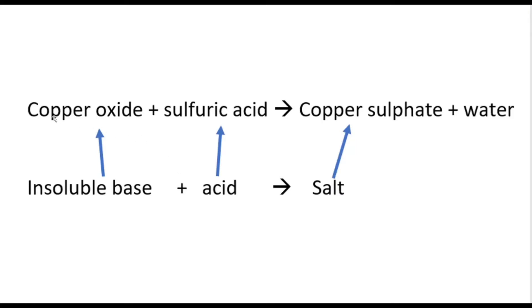Copper sulfate can be made by reacting copper oxide, which is an insoluble base. A base is a substance that reacts with an acid to give you salt and water. Copper oxide is also insoluble, which means it can't dissolve in water. So we'll get this copper oxide, react it with sulfuric acid, and we'll get copper sulfate and water.